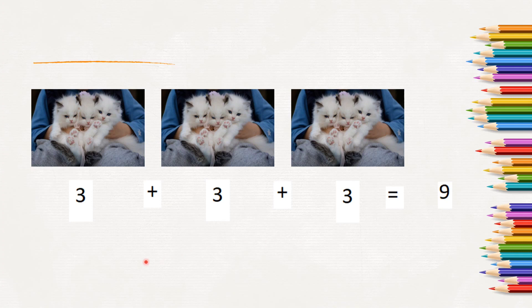What did we do here? We added the number 3, three times. So what is 3 times 3? 3 times 3 is 9. That means multiplication is nothing but repeated addition.